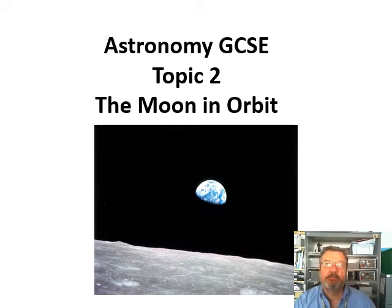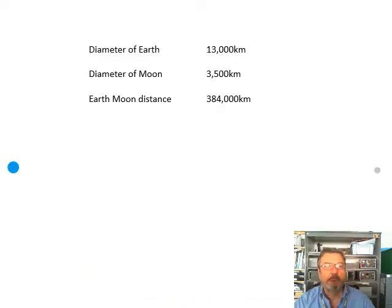Astronomy GCSE Topic 2: The Moon in Orbit. What you need to know about the orbit of the Moon. We know the diameter of the Earth and the diameter of the Moon from the last video. Now, the Earth to Moon distance you need to learn.